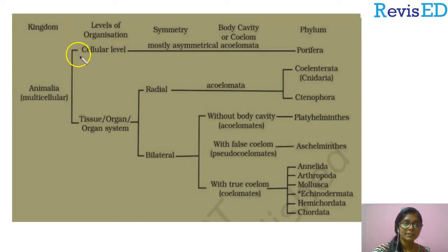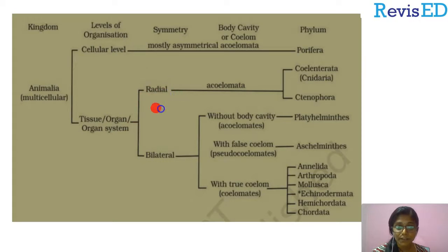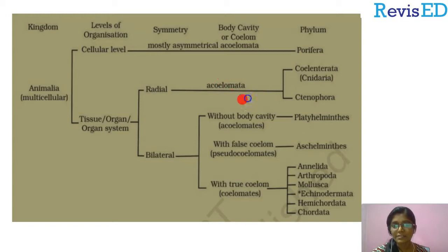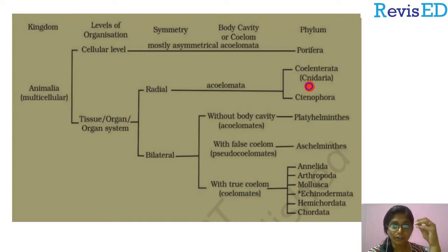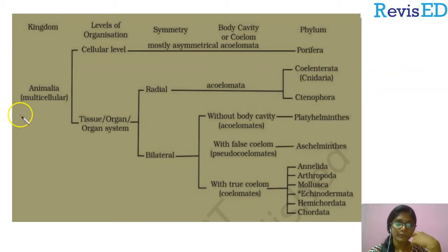The second major category, based on levels of organization, includes tissue, organ, and organ system level animals. These are again classified based on symmetry into radially symmetric and bilaterally symmetric animals. Radially symmetrical animals have no coelom, so they are acoelomates. The phyla coming under this are Cnidaria and Ctenophora. Cnidaria is also known as Nidaria because of specialized cells called nidoblast cells.